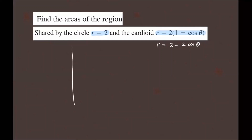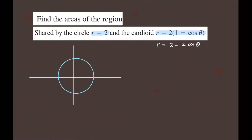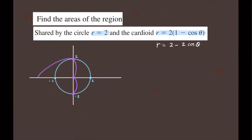Here's how you draw this. For r equals 2, that's just a circle of radius 2. So this point is 2, this is 2, and that's negative 2. The cardioid goes in the negative x direction, passing through those points and connecting to create a heart-like shape.